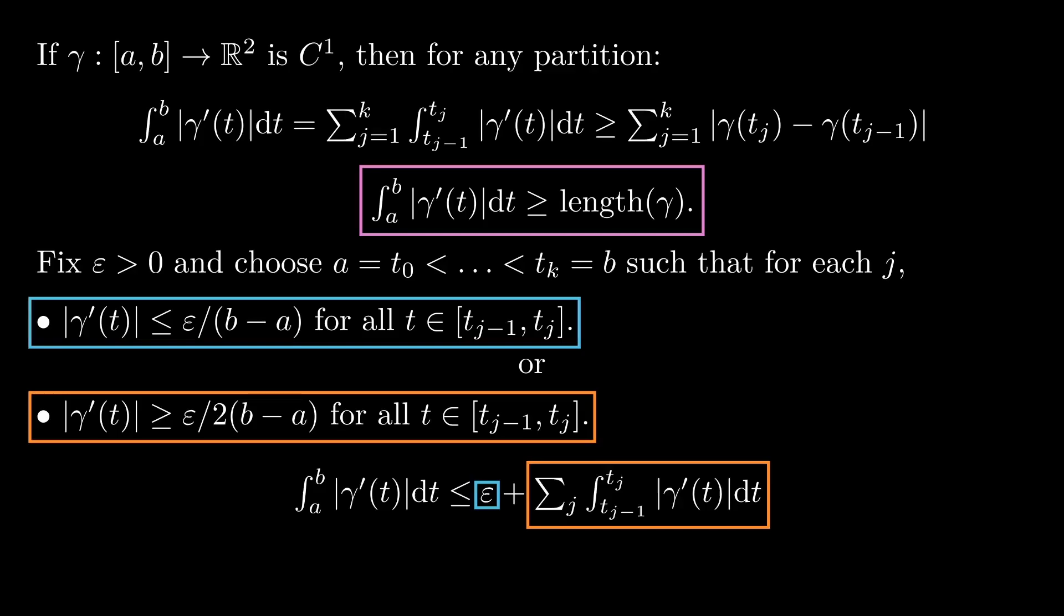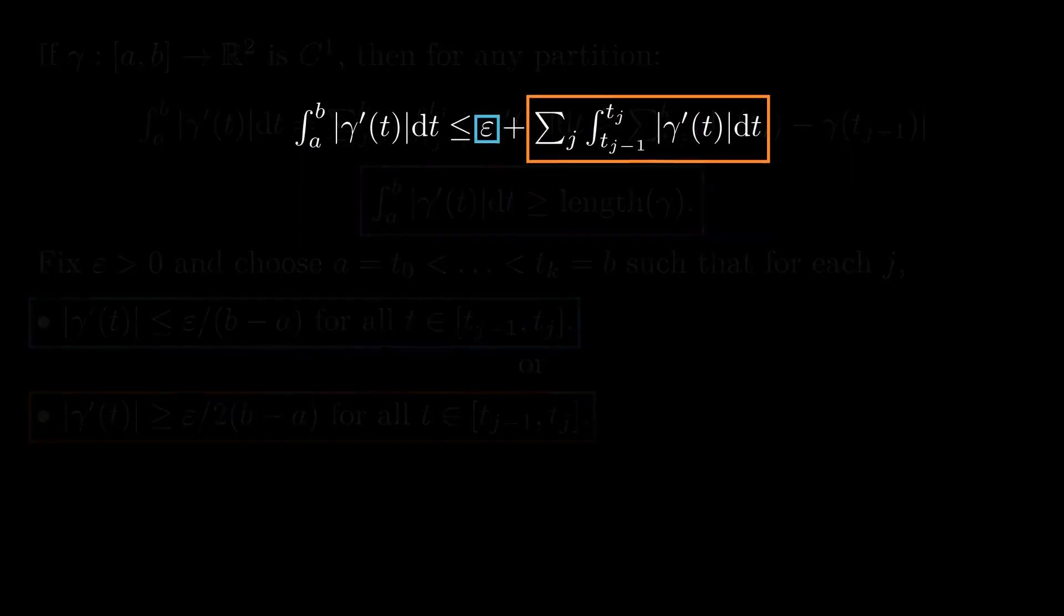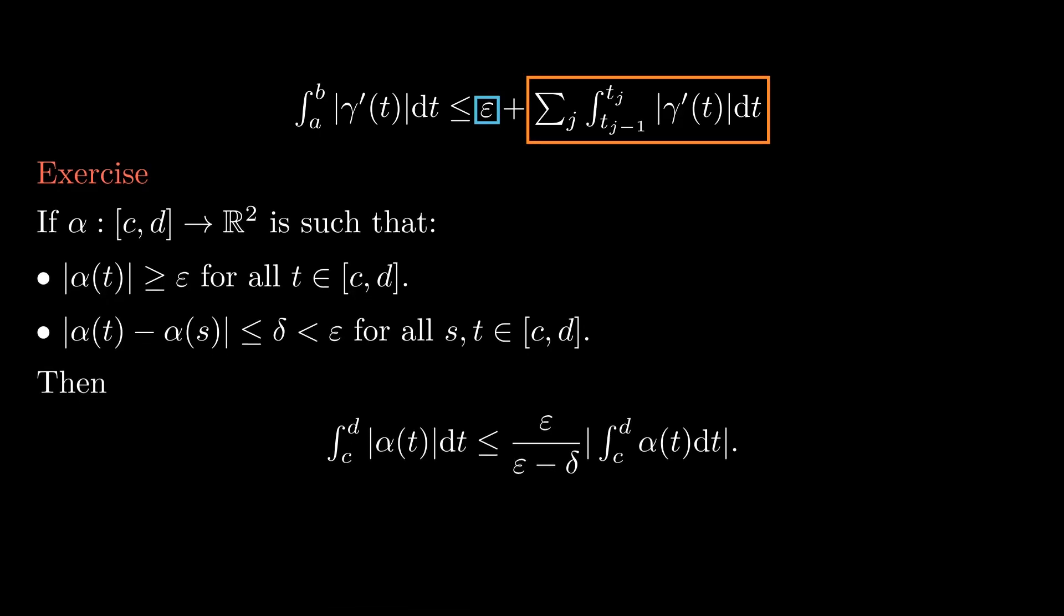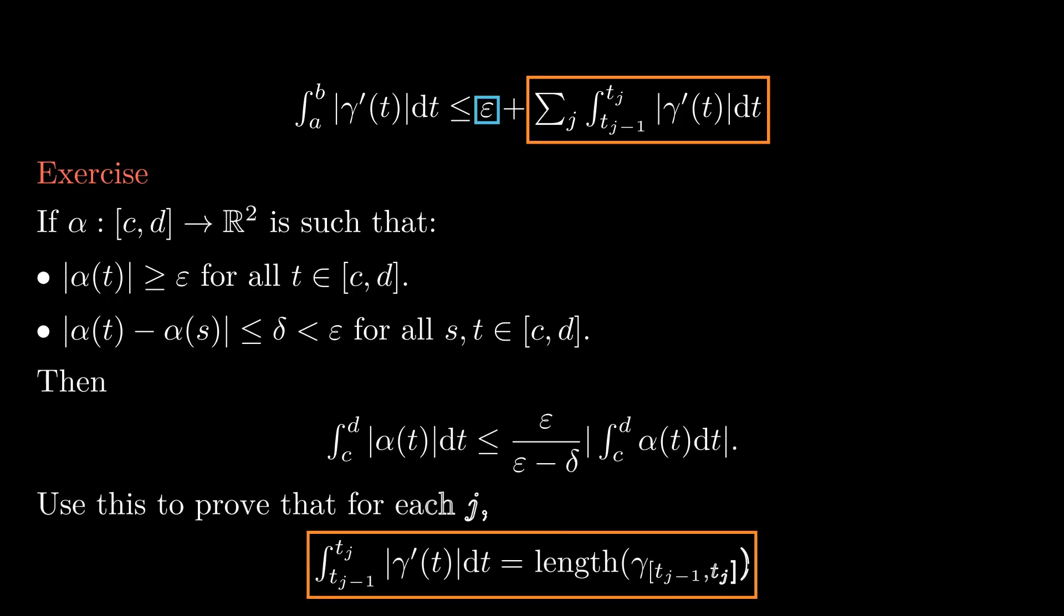I will leave this part to you in the following exercise. Imagine that we have a curve alpha that never goes close to the origin, and it doesn't move too much. Then one can bound the integral of its length by the length of its integral. Applying this exercise to the velocity vector, then show that this formula holds along the intervals where the curve never goes too slow.